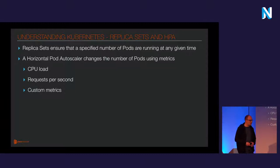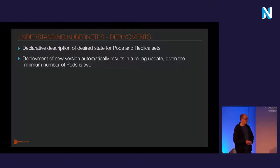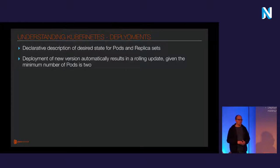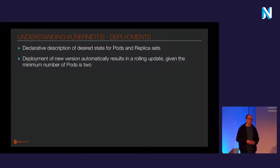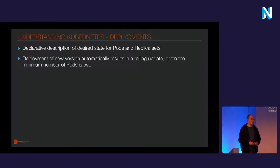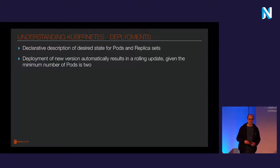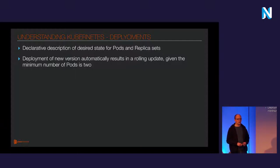Then there's another concept called deployments — a description for pods and replica sets. The cool thing about deployments is when you change your container, upload a new image on a push to your git repository, your deployment chain starts running and it automatically does a rolling update, ensuring zero downtime deployments. You just update your deployment, give it the new image ID or tag, and the rolling update starts automatically.